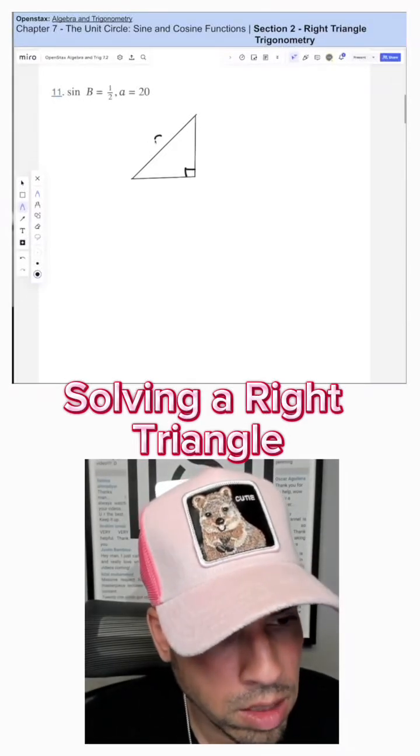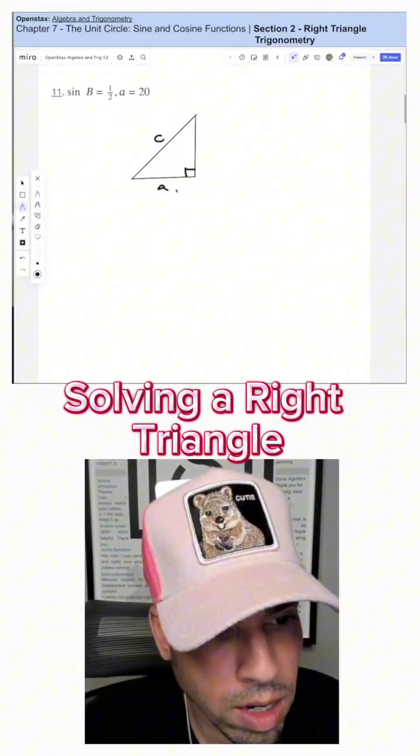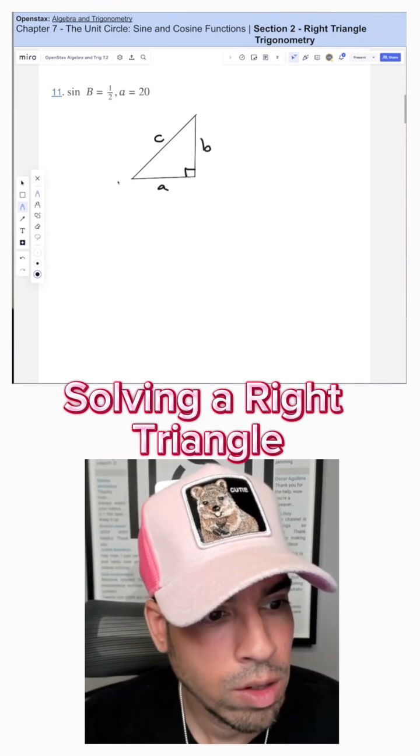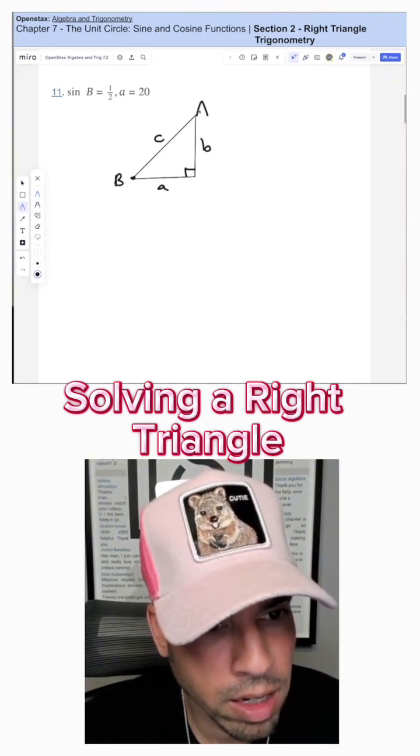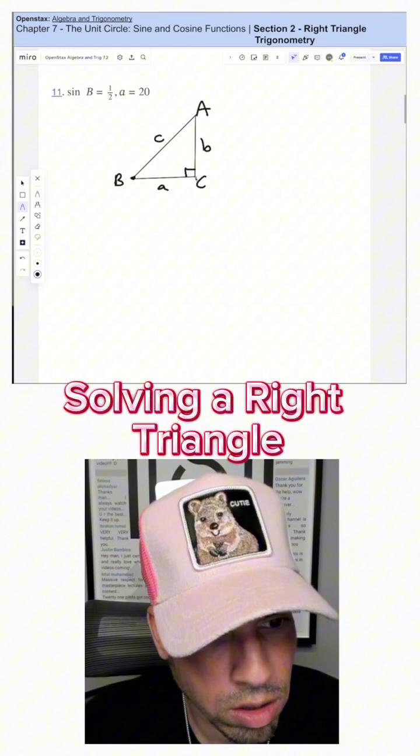For this question, we know that C is the hypotenuse, and then we've got A and we've got B. Likewise, angle B is here opposite little b, angle A is here, and then angle C is here.